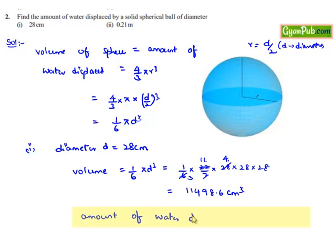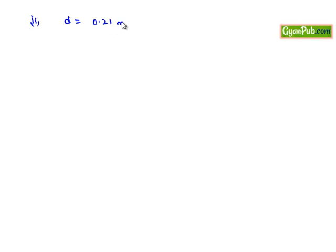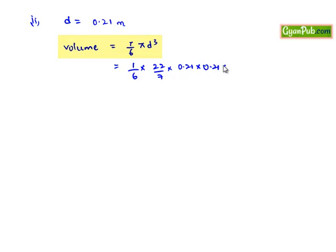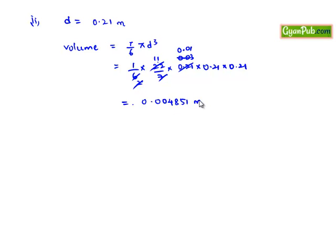Therefore the amount of water displaced in case 1 is 11,498.6 centimeter cube. Moving on to the second part, the diameter is 0.21 meters. The amount of water displaced equals the volume of sphere, which is (1/6) × π × d³ = 1/6 × 22/7 × 0.21 × 0.21 × 0.21. This equals 0.004851 meter cube, which converts to 4851 centimeter cube.